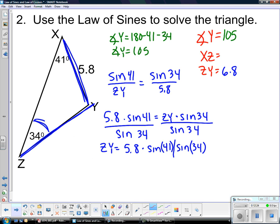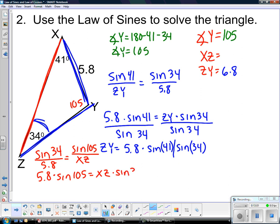To find the other side, to find xz. Remember, you can't use Pythagorean theorem because this isn't a right triangle. So you need to set up the law of sines again. The sine of 34 over 5.8 equals, well y was 105, sine of 105 over xz. Cross multiply, divide by the sine of 34. Type that in your calculator, you get xz to be 10.02.